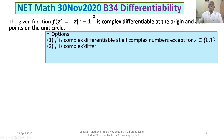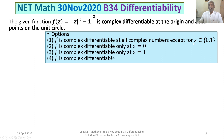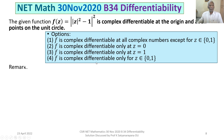Option 1 says f is complex differentiable at all complex numbers except for z in {0, 1} — this is not true. Option 2 is not true because it says it is differentiable only at z = 0. Option 3 is also not true because it says differentiable only at z = 1. Option 4 is also not true as stated. So we notice that none of the given options is exactly true.